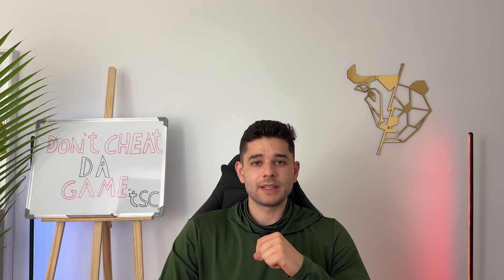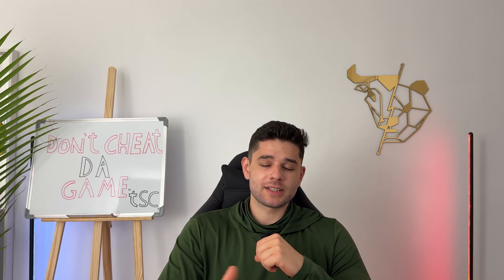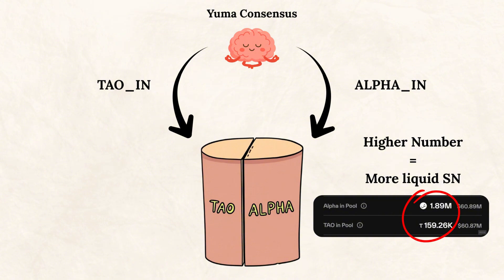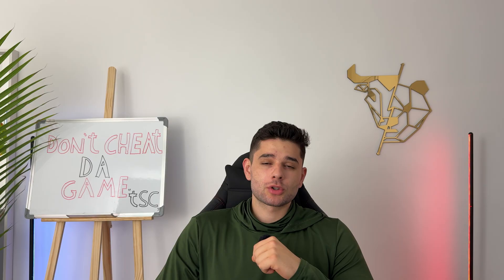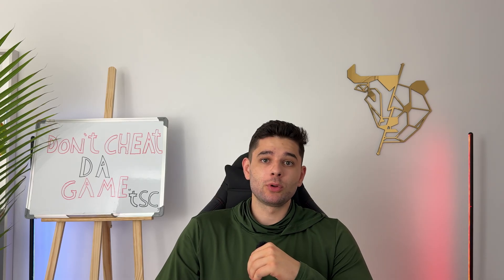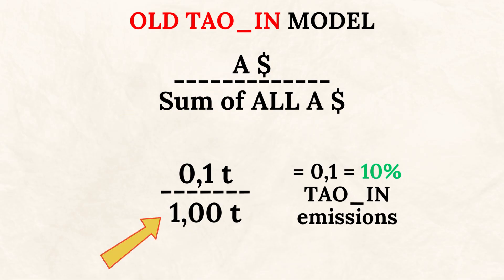We're also going to go over a second update they're currently pushing because it's going to affect root stakers across the whole network. Every subnet has its own emission pool paired with tau and alpha, and each subnet gets emissions in three different ways. Under the old emission model, every 12-second block a subnet would get a fixed amount of tau-in into the subnet's liquidity pool based on the subnet's price divided by the total sum of all subnet prices.